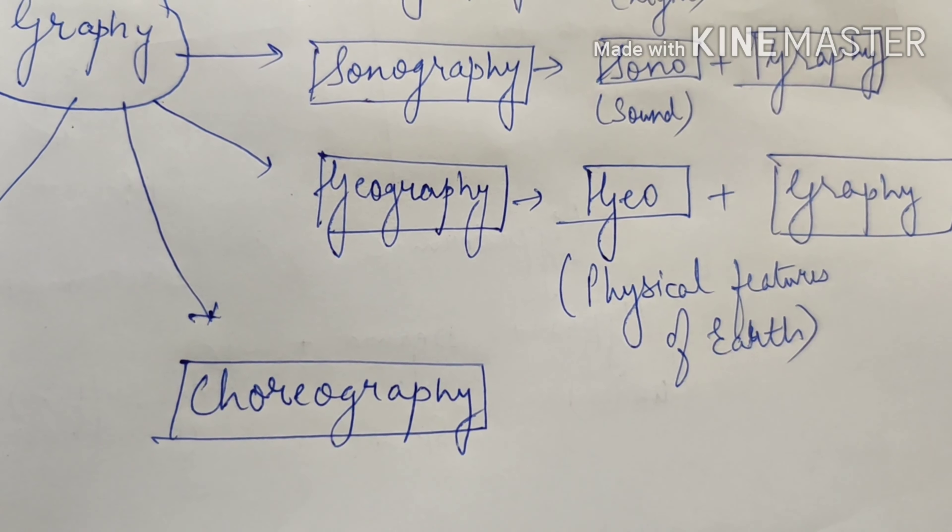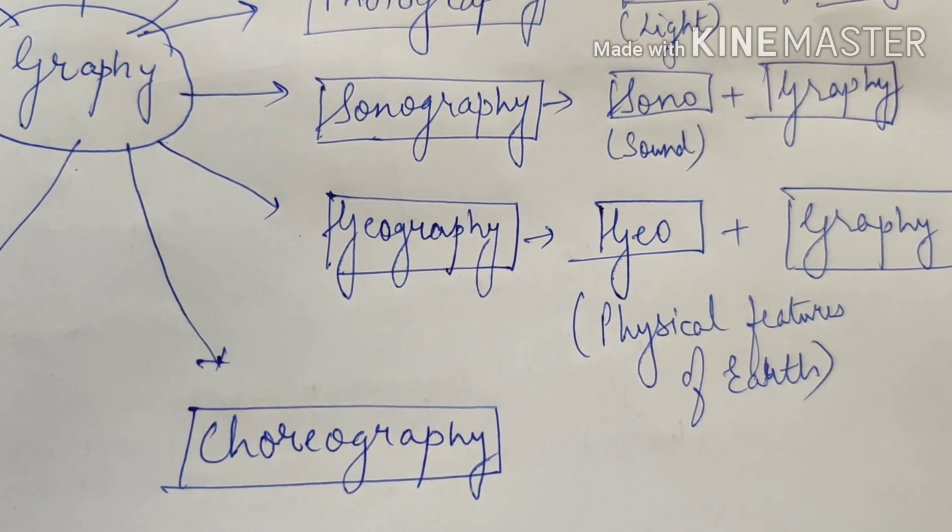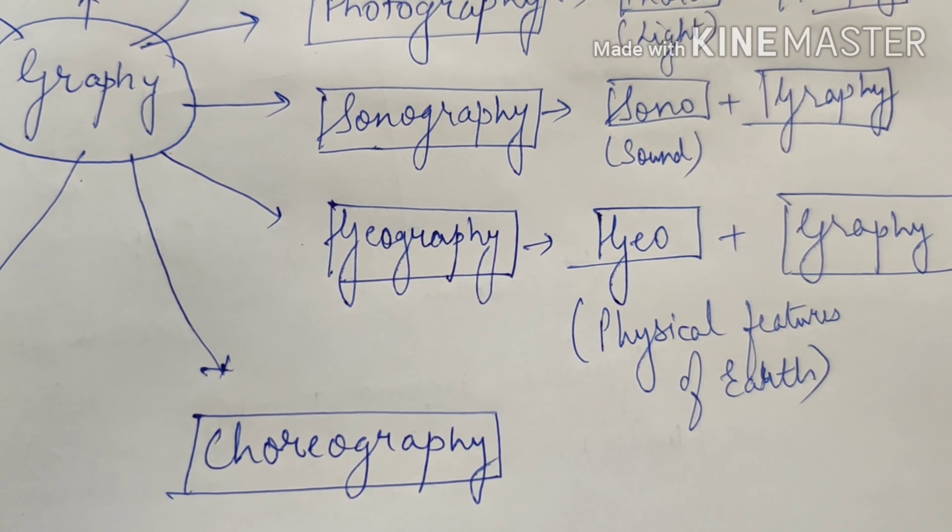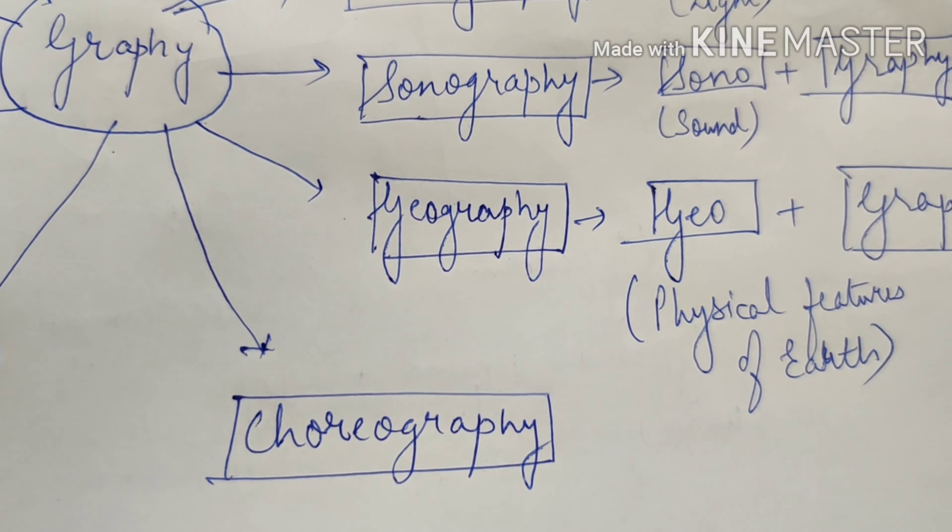Choreography. When we try to use the different forms of art or dances and we try to write with that. That is when we try to perform certain art forms with the use of certain art forms like dances that's called choreography.